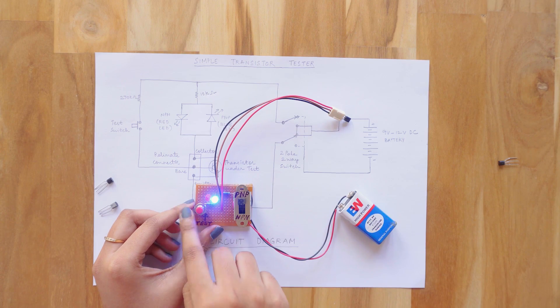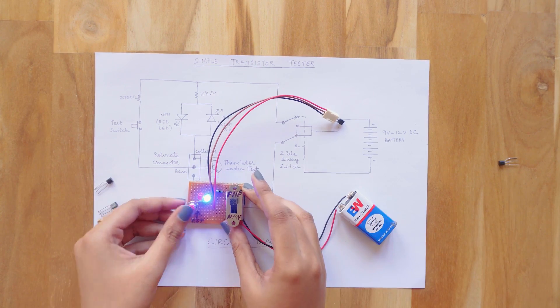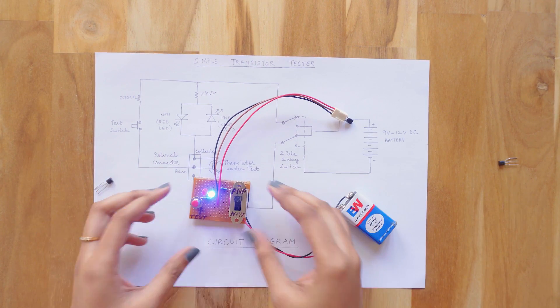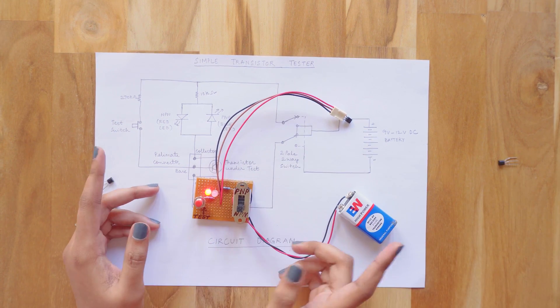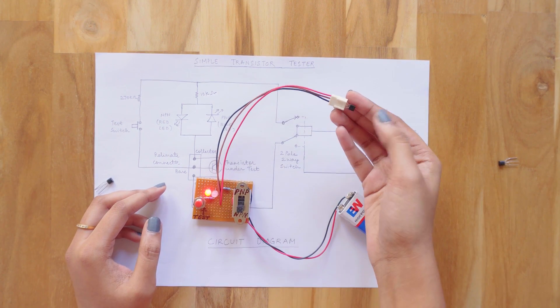You can see that the LED is glowing in PNP mode without pressing the test switch and even in NPN position the LED is glowing. That means it is an internally shorted and faulty transistor.